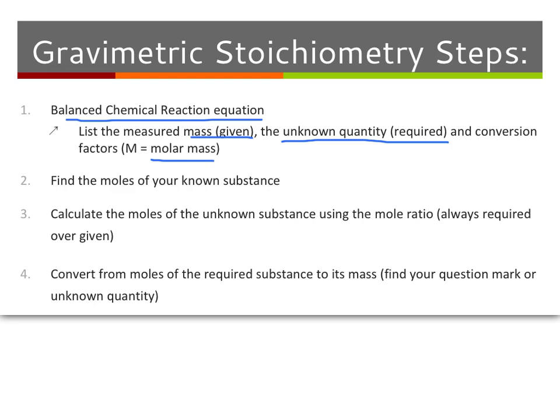Your second step is you're going to find the moles of the thing that you know. Your third step is you're going to use the mole ratio — and you always need to use your mole ratio in this third step — to find the moles of the quantity that you don't know. And then the fourth step is to find your question mark, going from moles to mass.